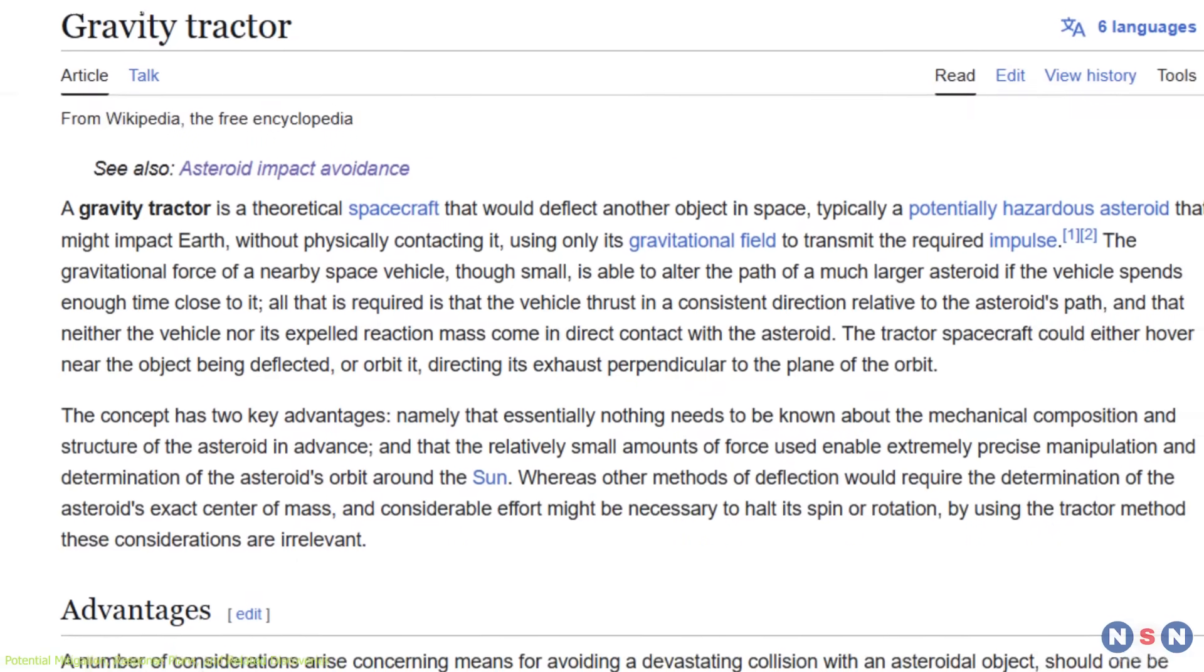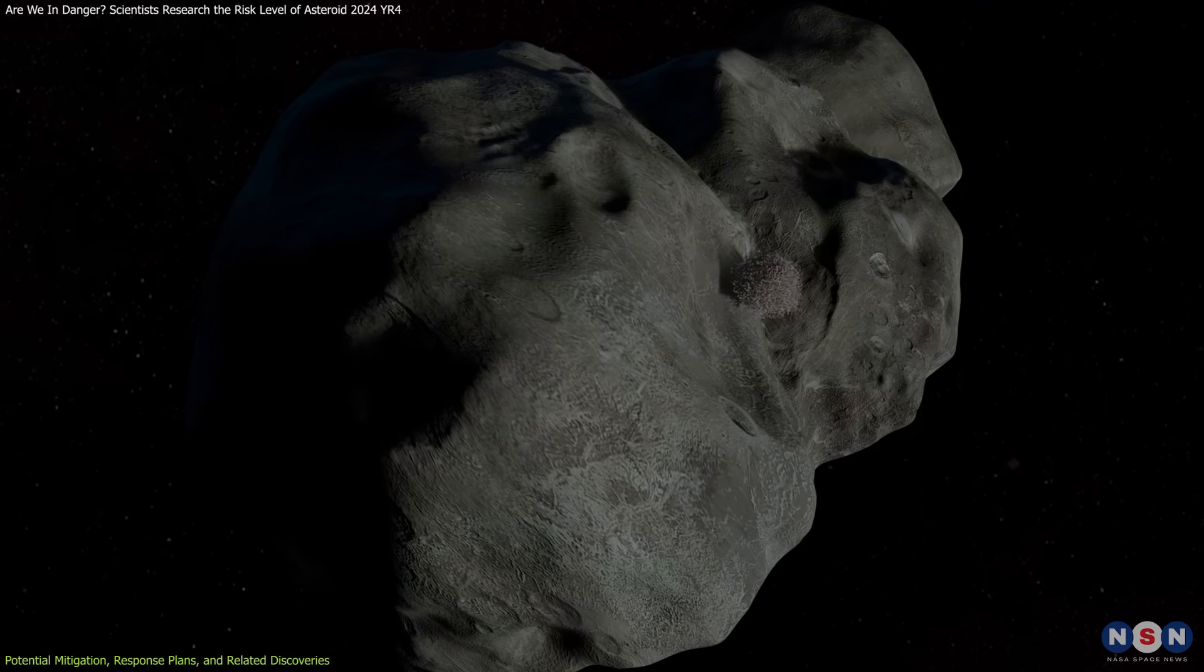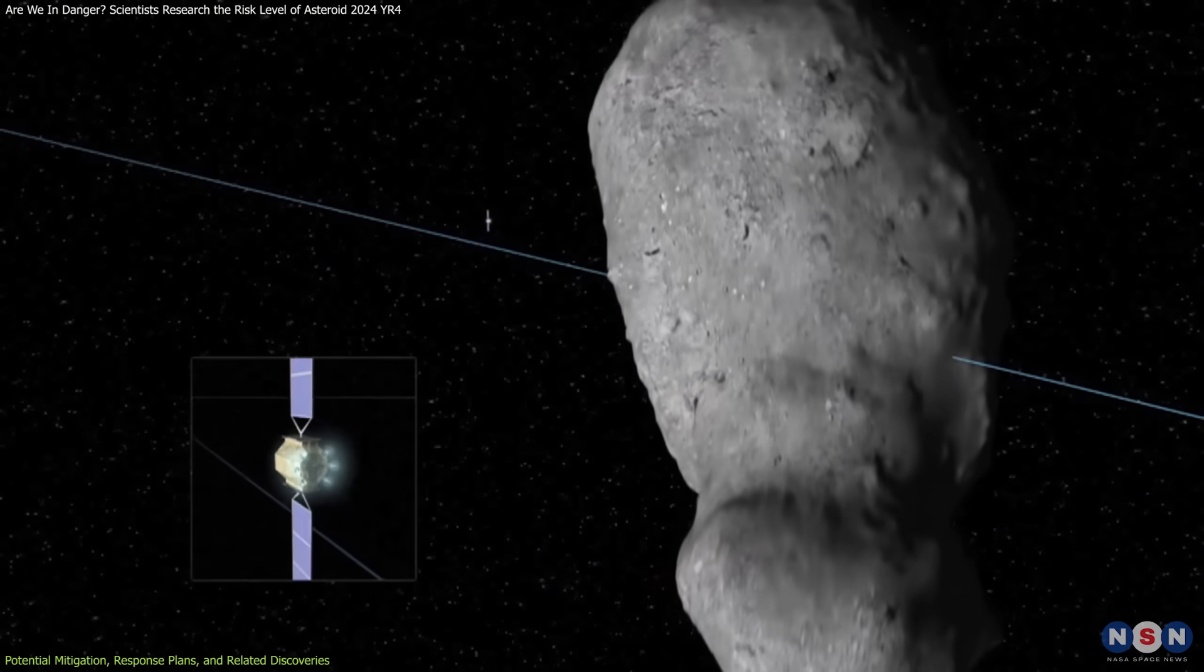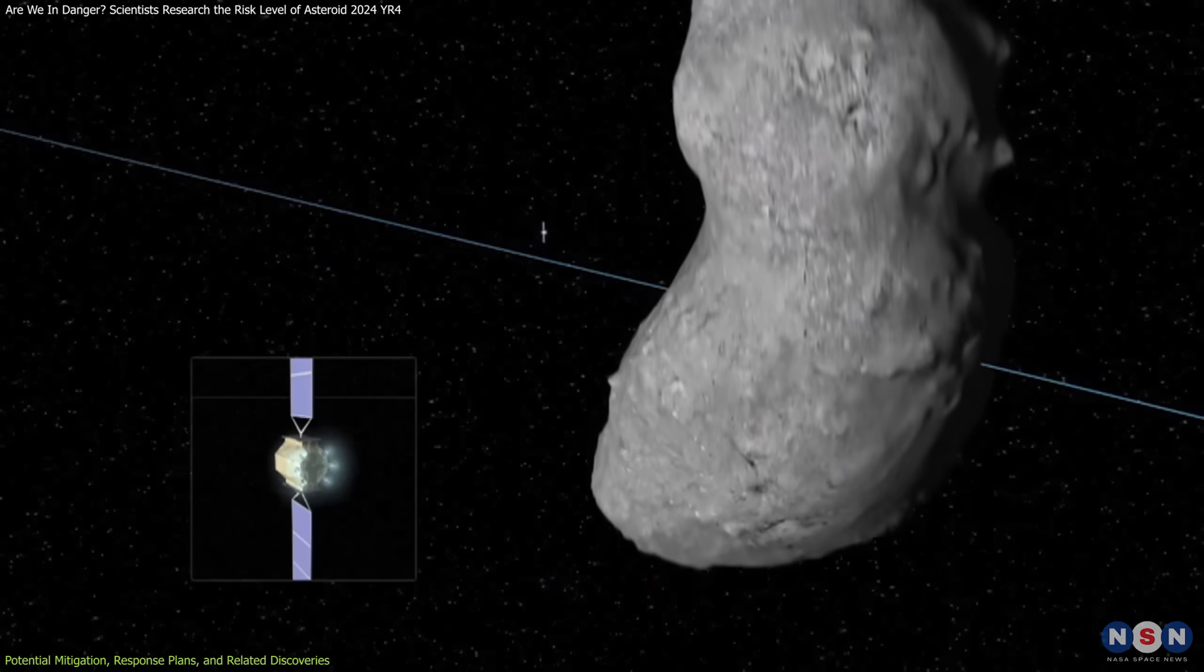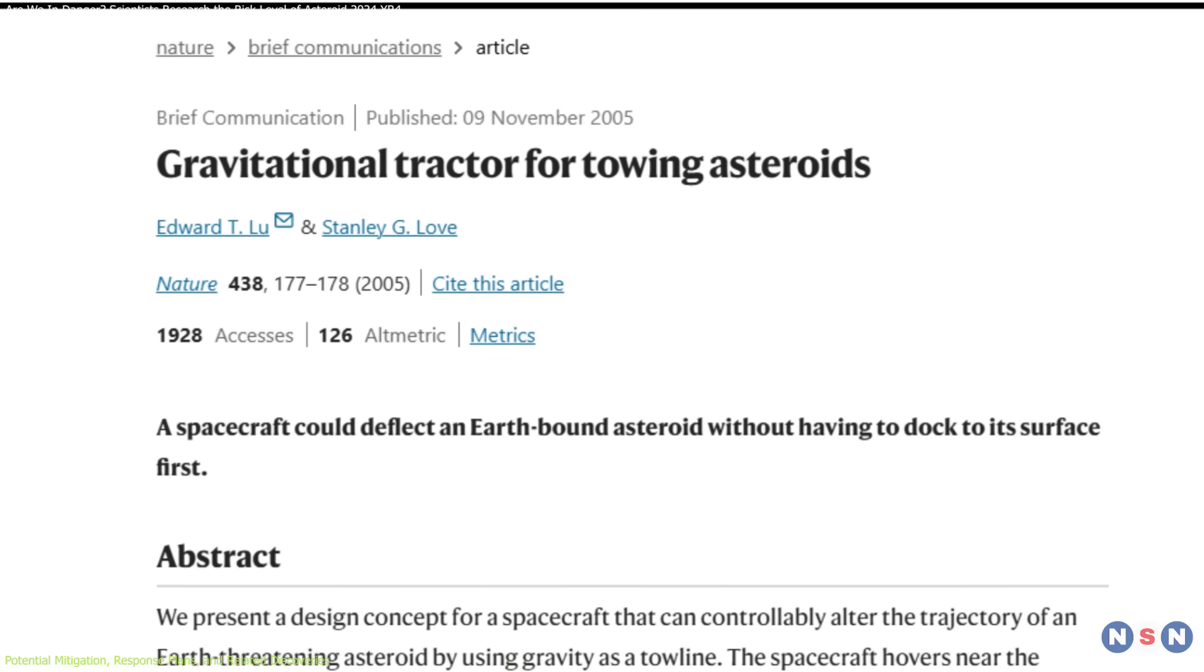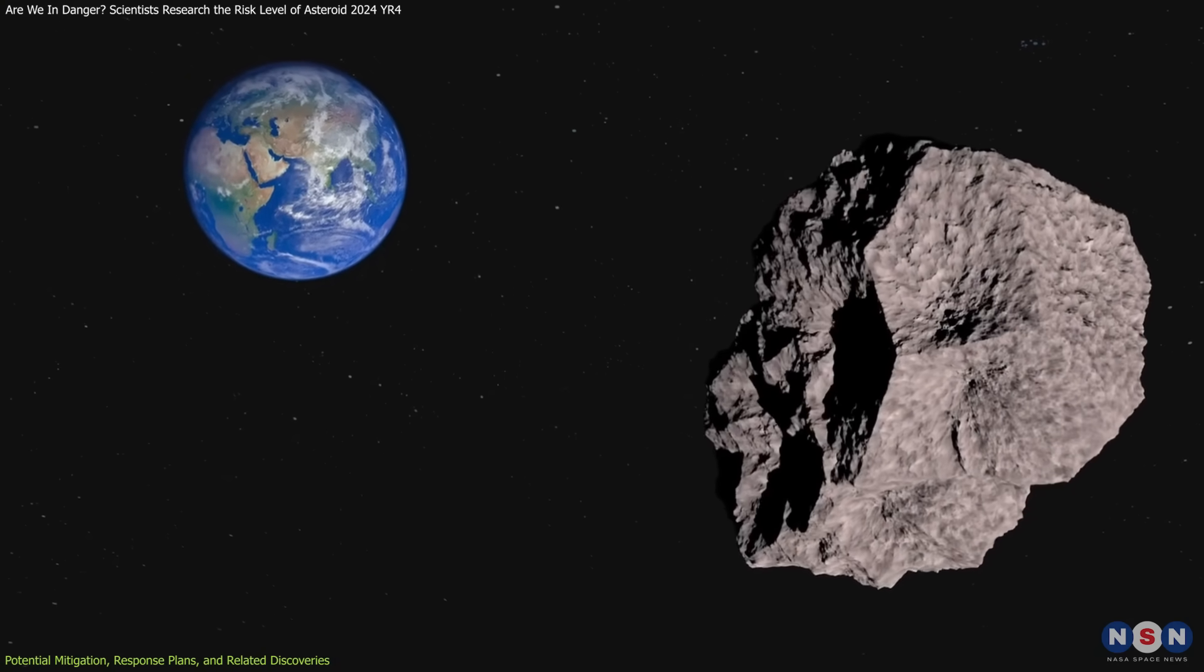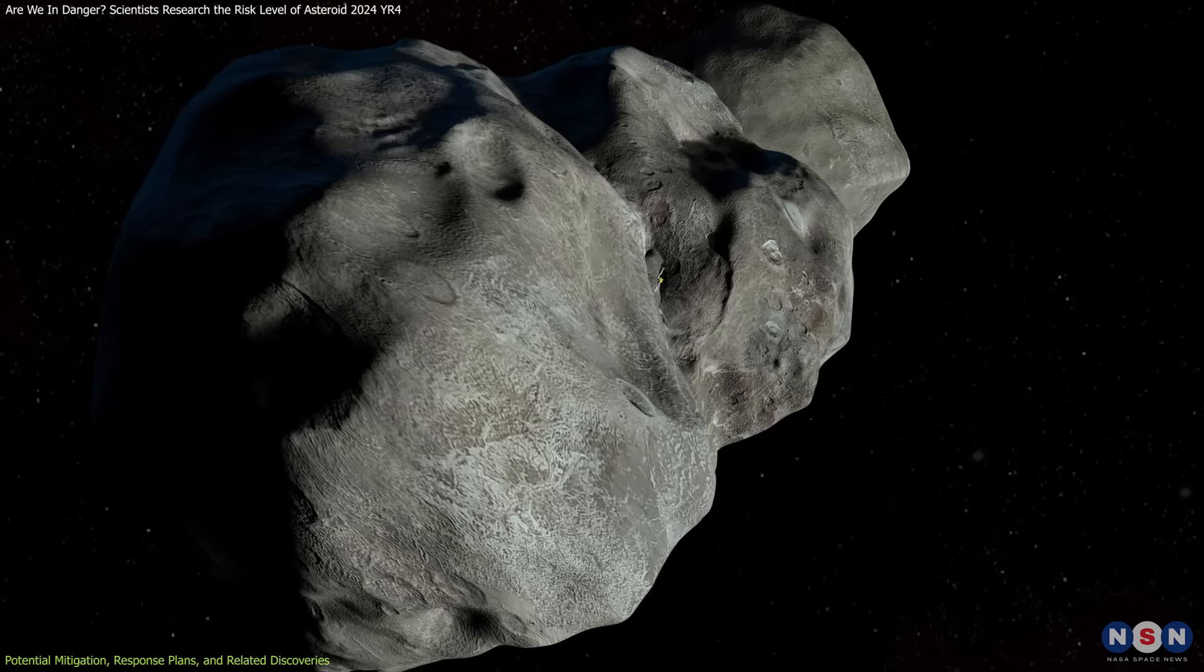Another approach is the concept of the gravity tractor. Unlike methods that rely on direct impact or energy transfer, a gravity tractor involves positioning a massive spacecraft near the asteroid. Over time, the spacecraft's gravitational pull exerts a subtle but persistent force, gradually nudging the asteroid onto a safer trajectory. The theoretical models and small-scale tests conducted so far suggest that this method is especially promising when dealing with objects that are discovered well in advance. It's a strategy that emphasizes patience and precision rather than brute force.